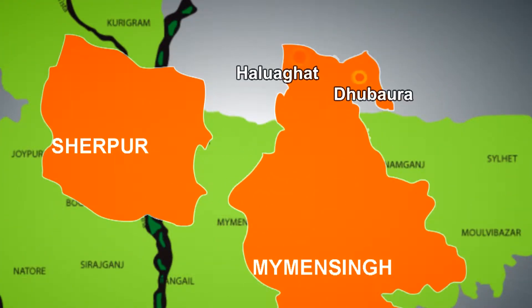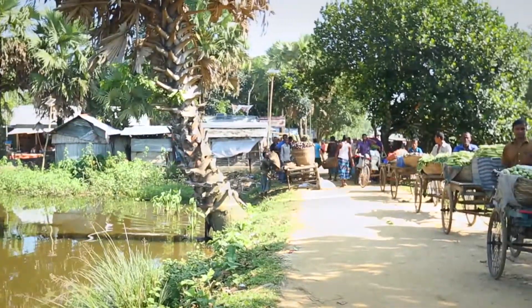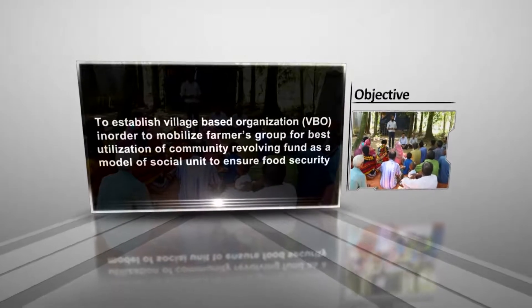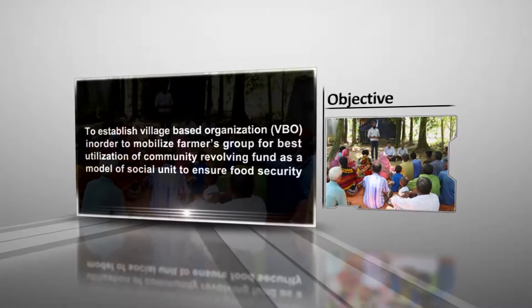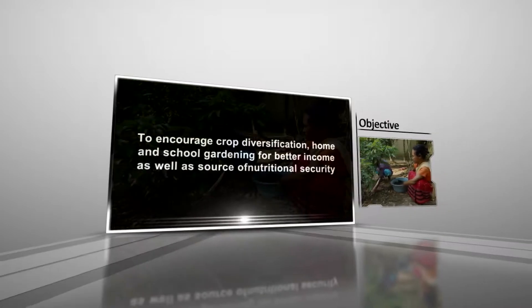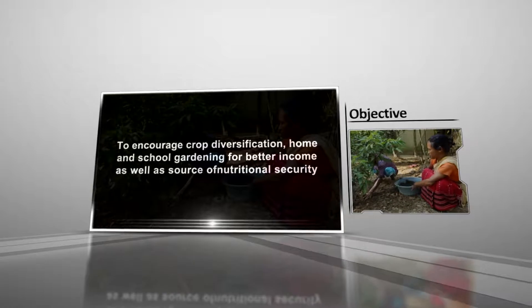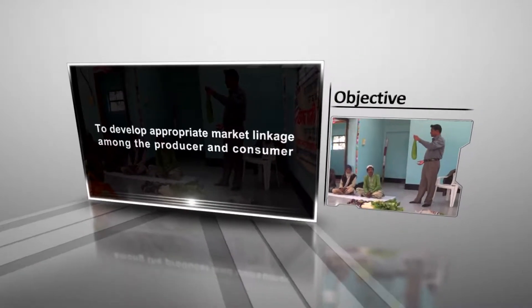The project is being implemented in Haluaghat and Dhubaura upazilas of Mymensingh district, and Jhenaigati and Nalitabari upazilas of Sherpur district. The main objectives are to establish village-based organizations to mobilize farmers groups for best utilization of a community revolving fund as a model social unit to ensure food security, and to encourage crop diversification, home and school gardening for better income and nutritional security.